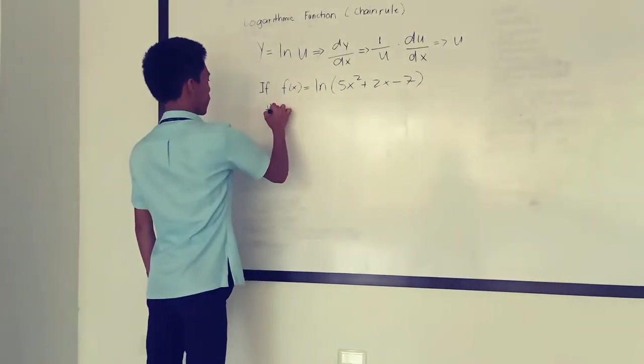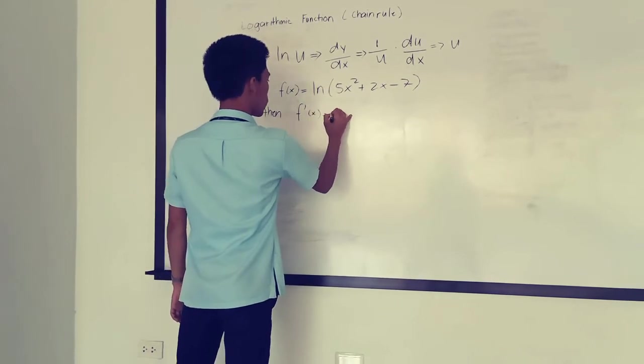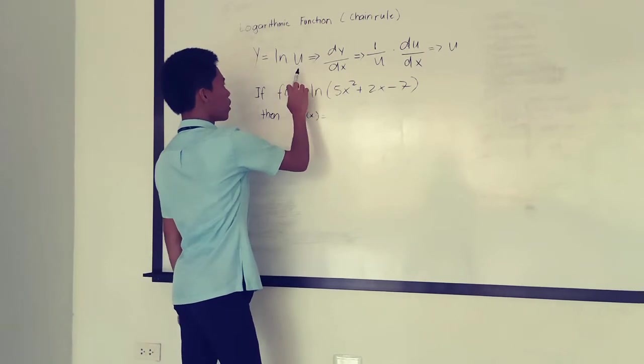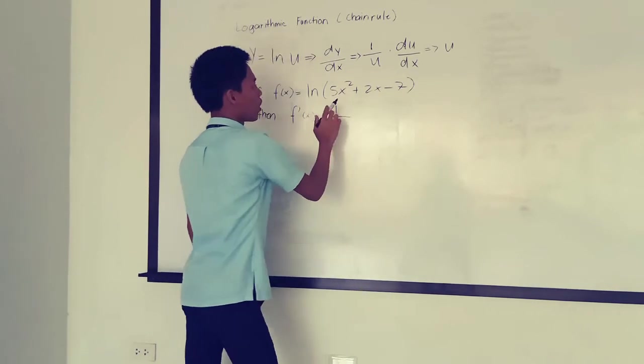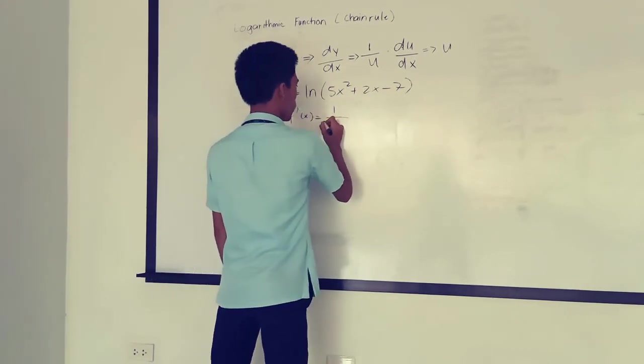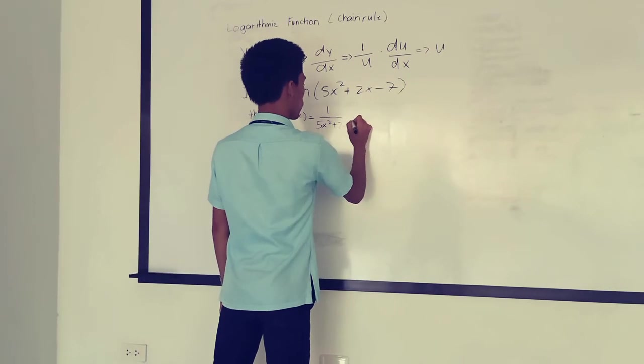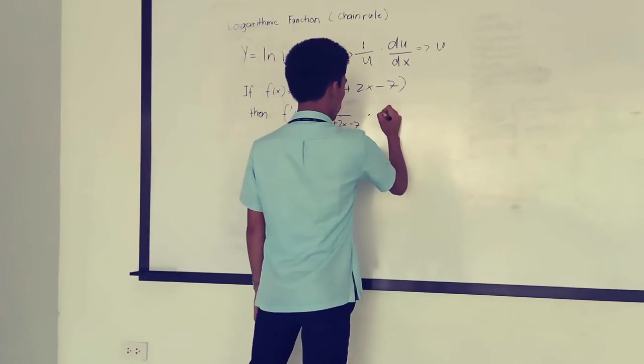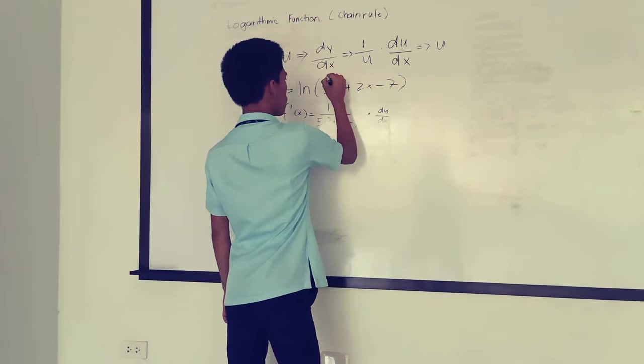Then f'(x) is equal to... so the derivative of ln(u) is 1/u, one over... so we're going to let u be this 5x² + 2x - 7, times the derivative of u, which is this part.